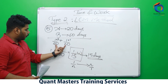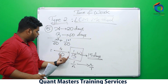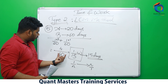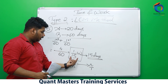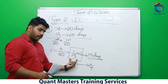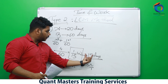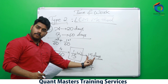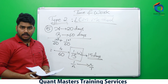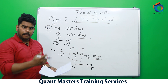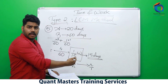So first we find out one day's work, then we find out their combined one day work. In one day if they are doing 1/15th of the work, they will complete the work in 15 days. This method is called the fraction method, and many textbooks will use this method.